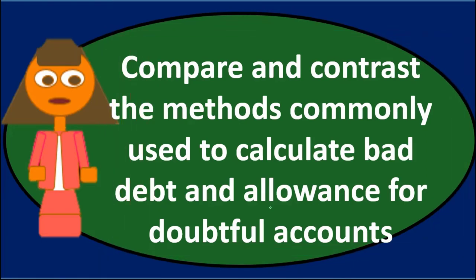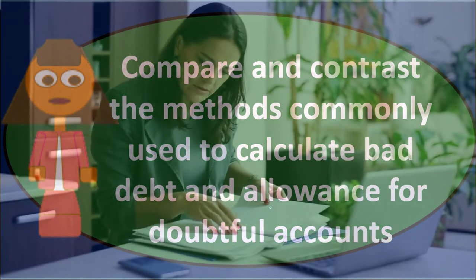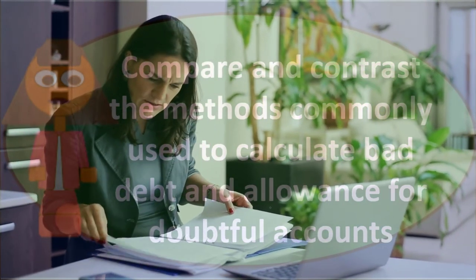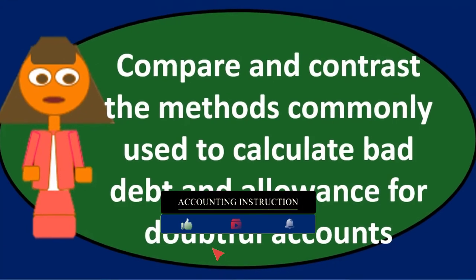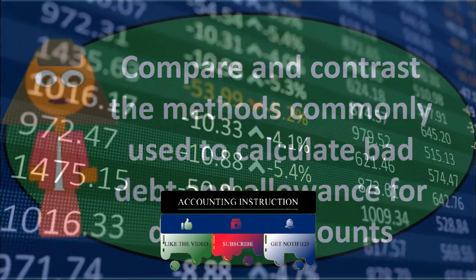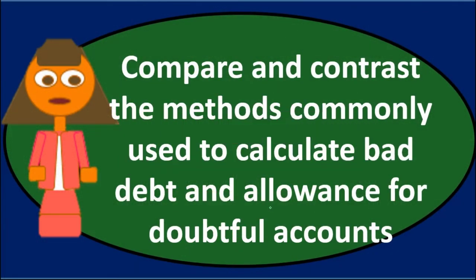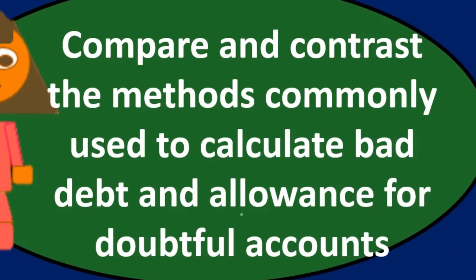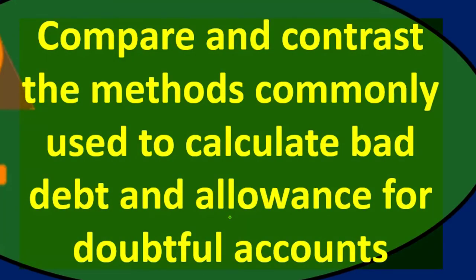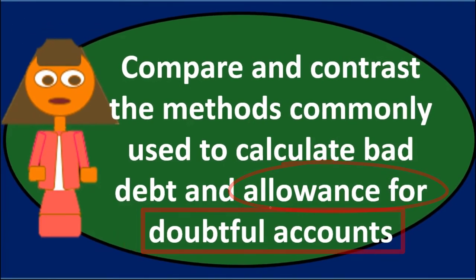Using the percentage of sales method, we look at credit sales made during the period, then use past history or industry standards to estimate what percentage of those sales will become uncollectible. We then debit bad debt expense — reducing net income — matching uncollectible amounts to the revenue earned in the same period, rather than recording it in a later period as the direct write-off method would.